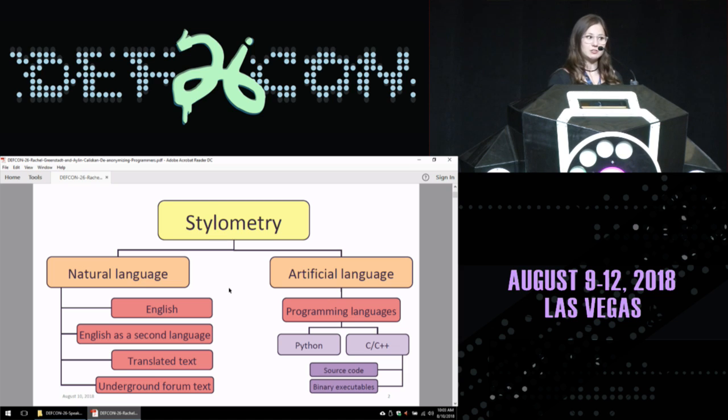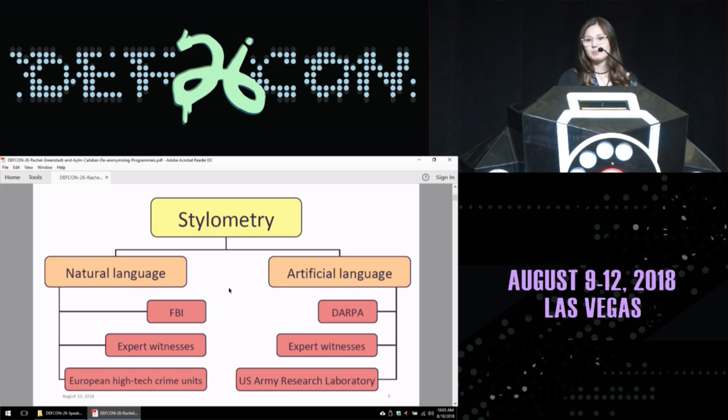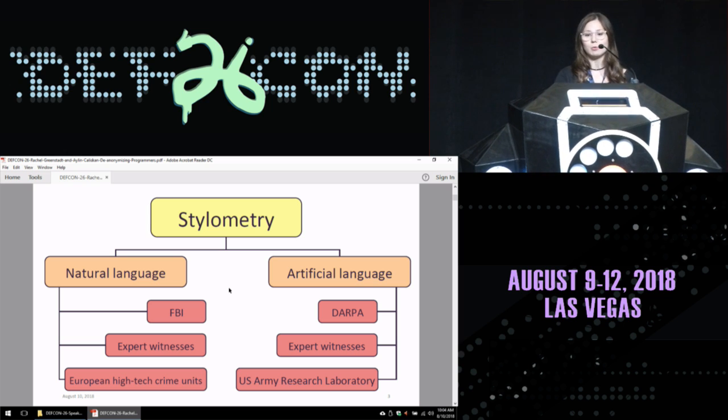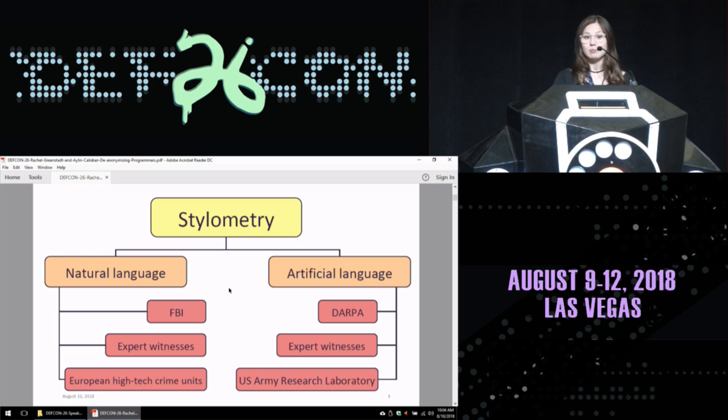In artificial languages, we wanted to see if coding style is unique for each programmer, so that it becomes a fingerprint for them. We have been focusing on Python, as well as C and C++. We looked at source code and saw very high accuracy in de-anonymizing programmers, so we wanted to see if we can do this with binaries as well. The tools that we have developed and made open source are being used by many researchers, the FBI, expert witnesses, European high-tech crime units to identify suspects in different online platforms.